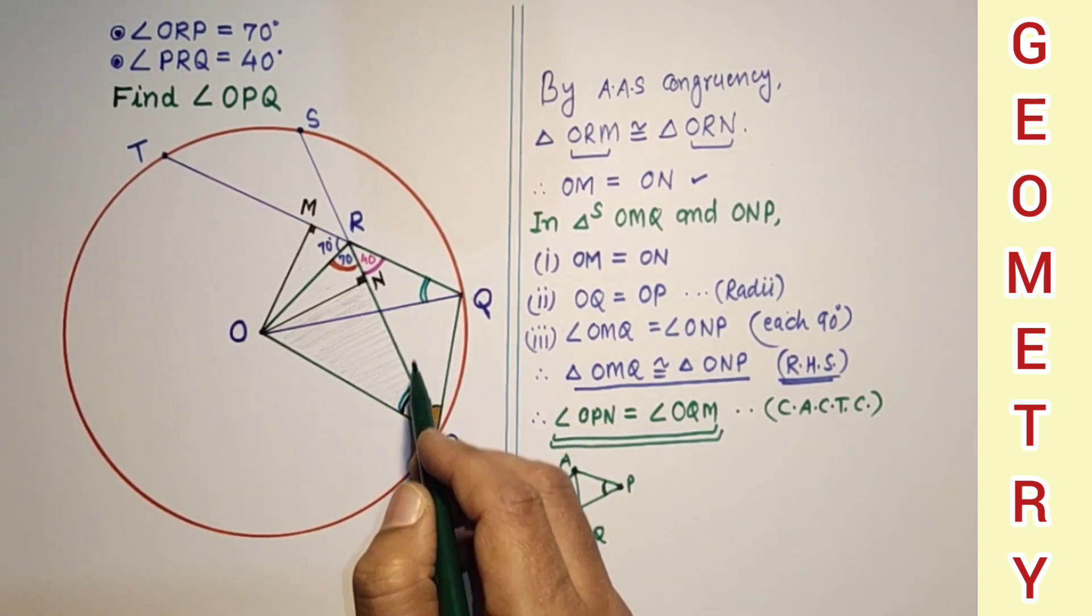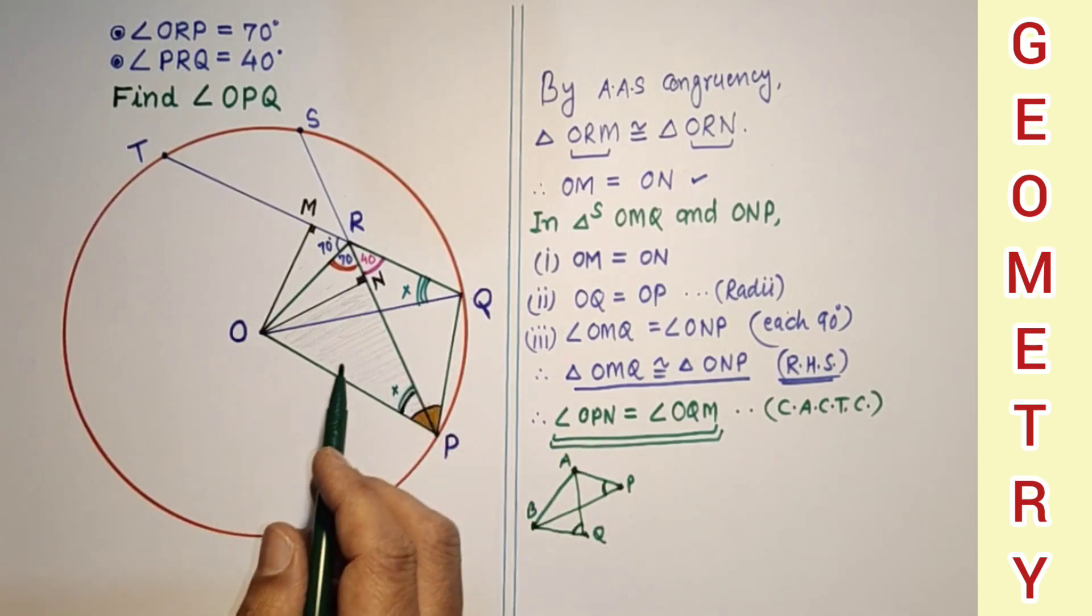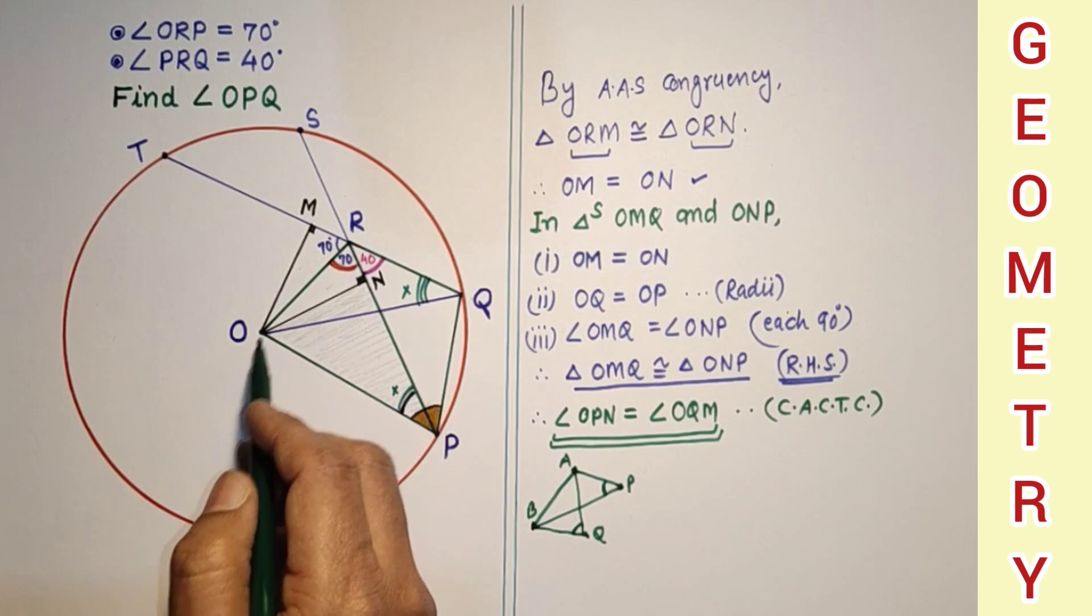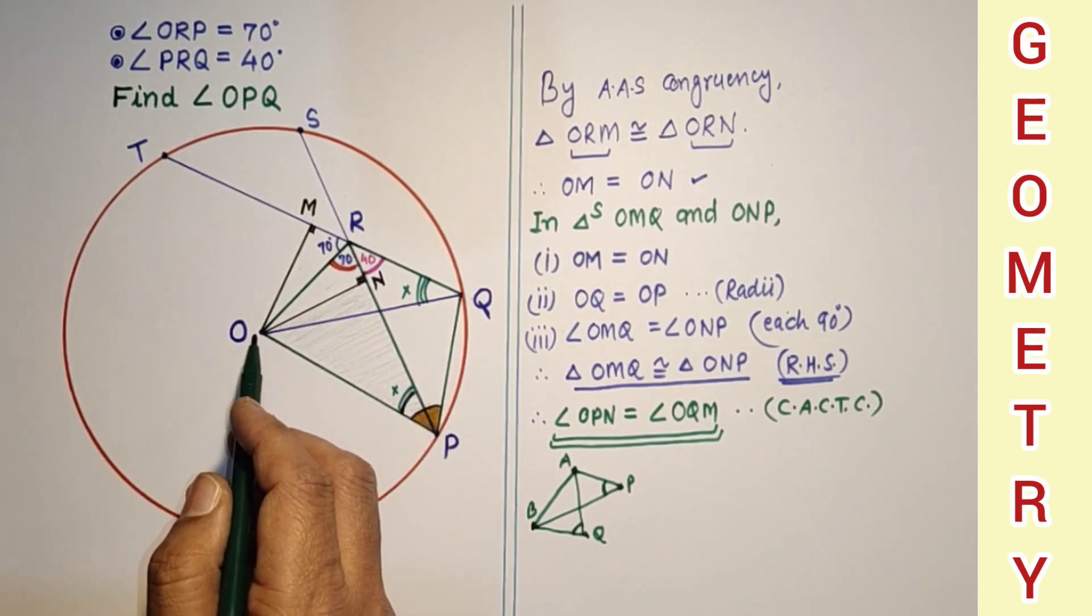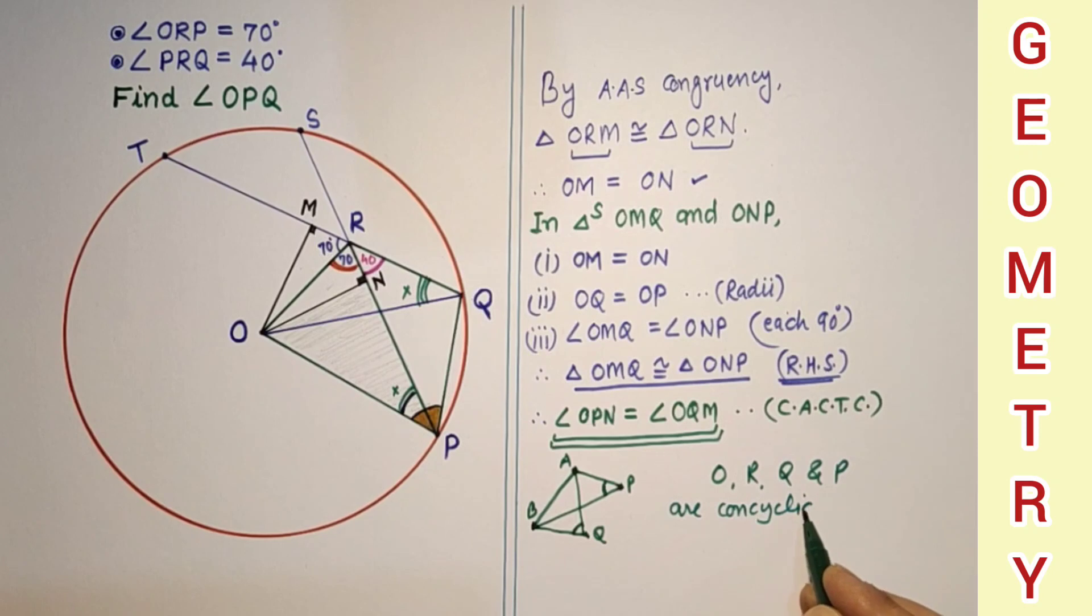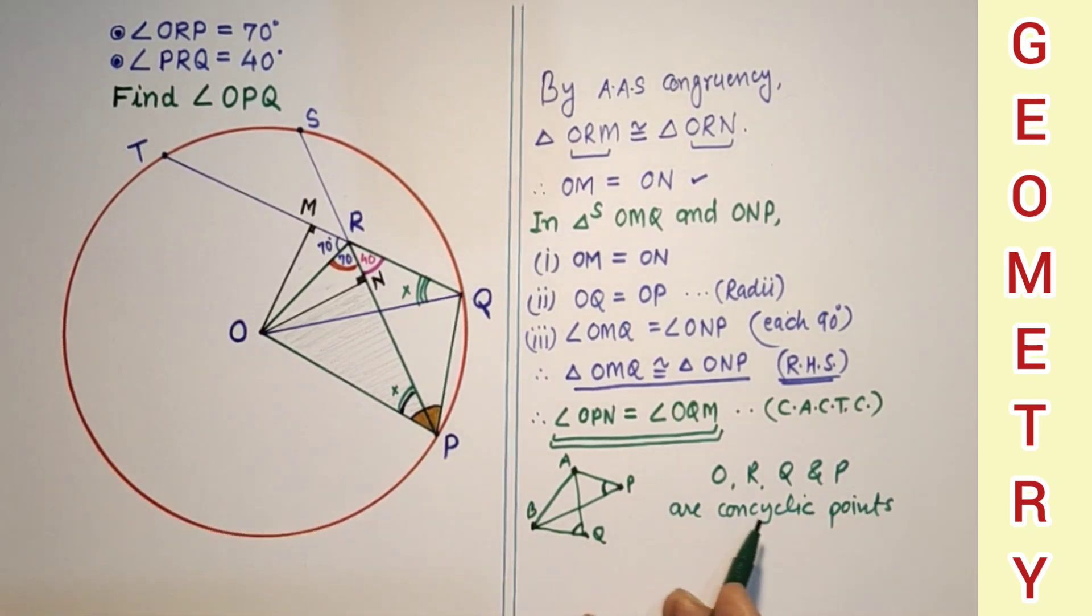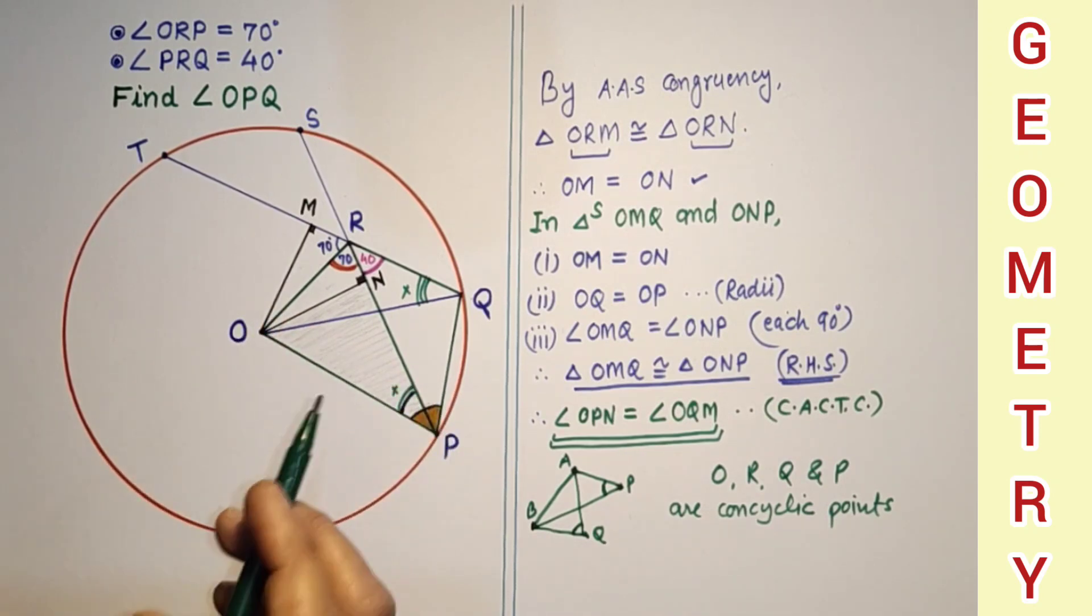And because these two angles are equal, we found these two angles are equal. These two angles are subtended by chord OR. It means we can say that points O, R, Q, P are concyclic points. Using this fact, since O, R, Q, P is a cyclic quadrilateral.